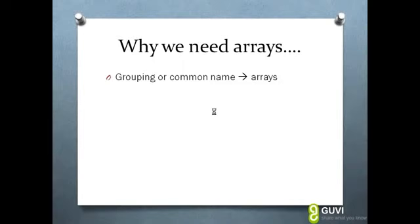If you look at the previous slide, we had a pattern. All our marks are going to be integers. So there are two attributes: one is same data type, and then it serves the same purpose. So why can't we give the same name for all the variables?